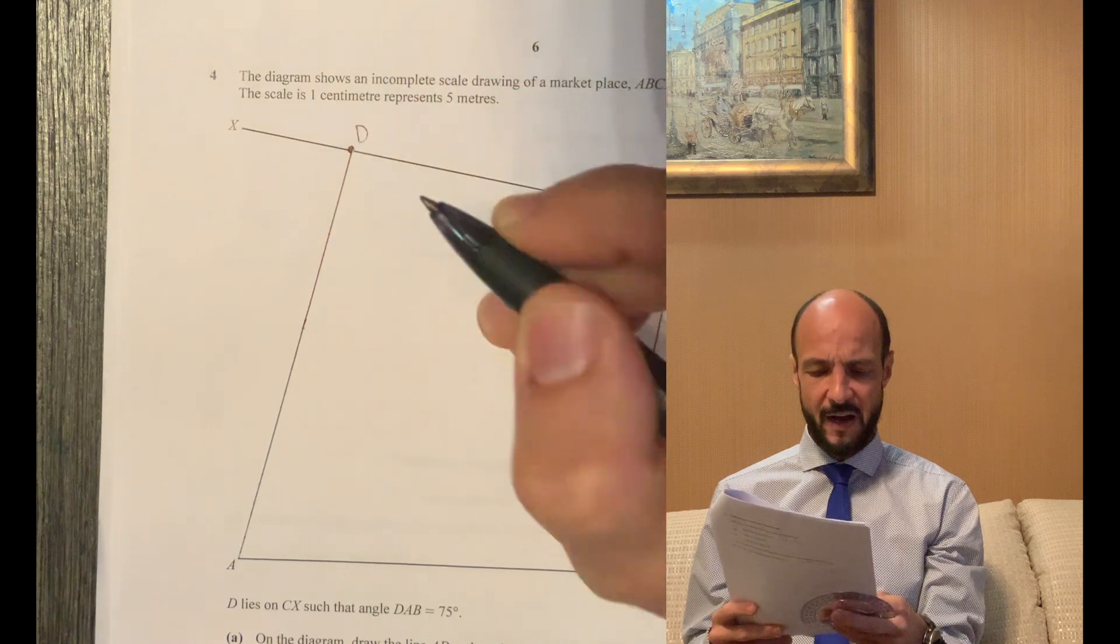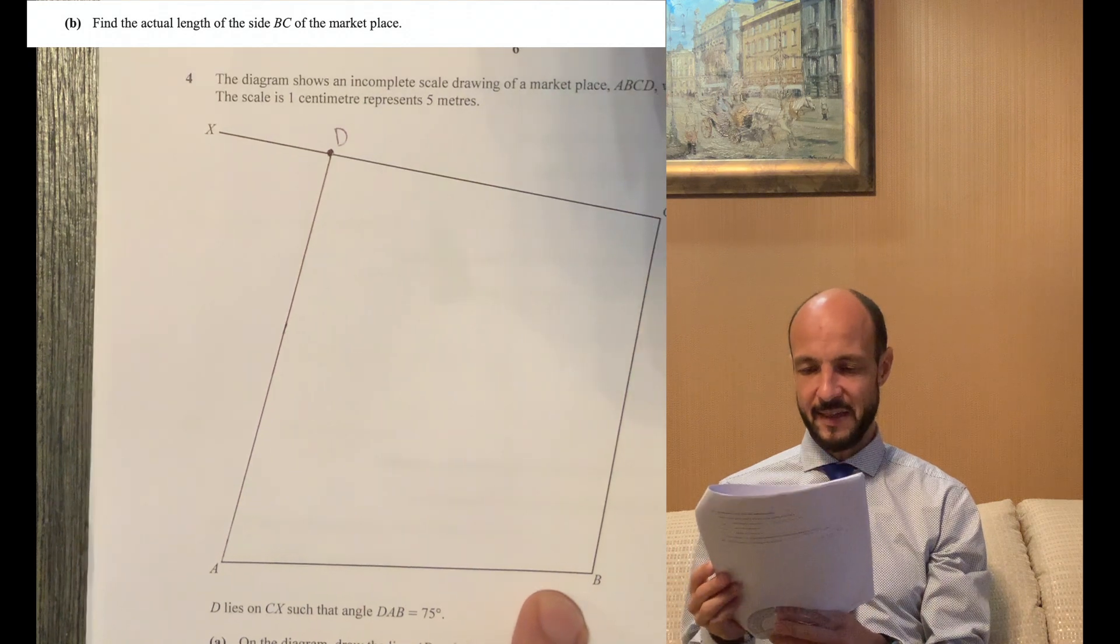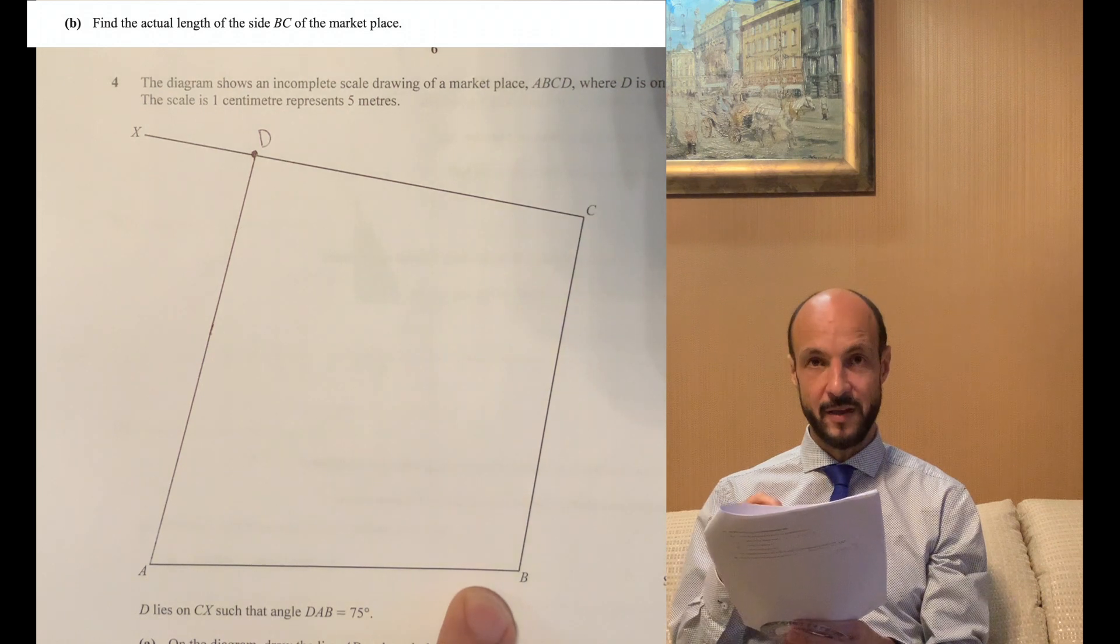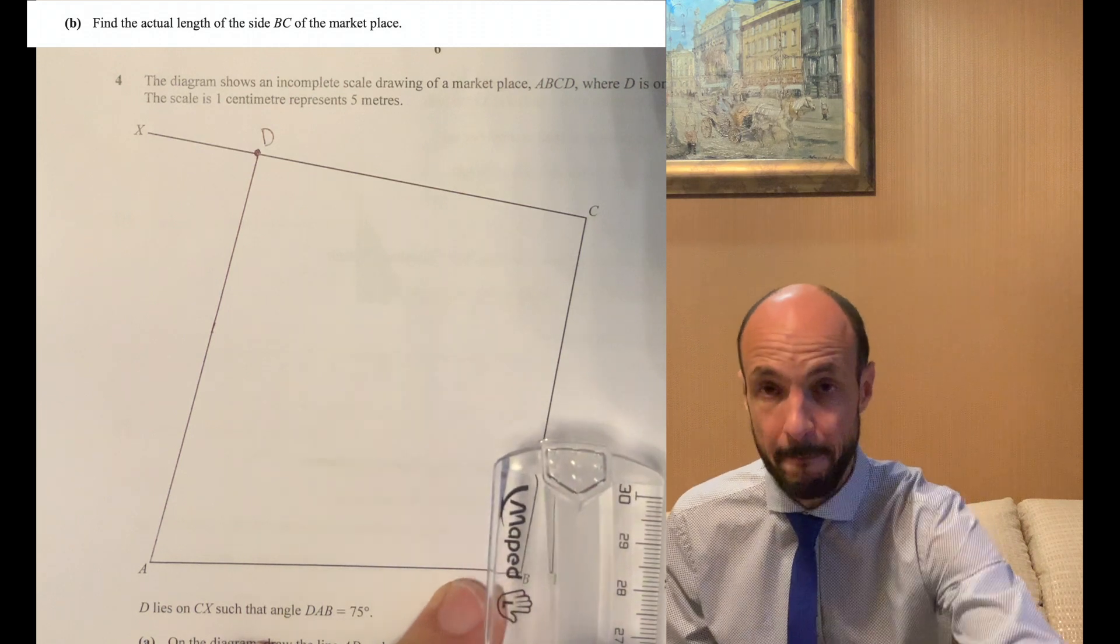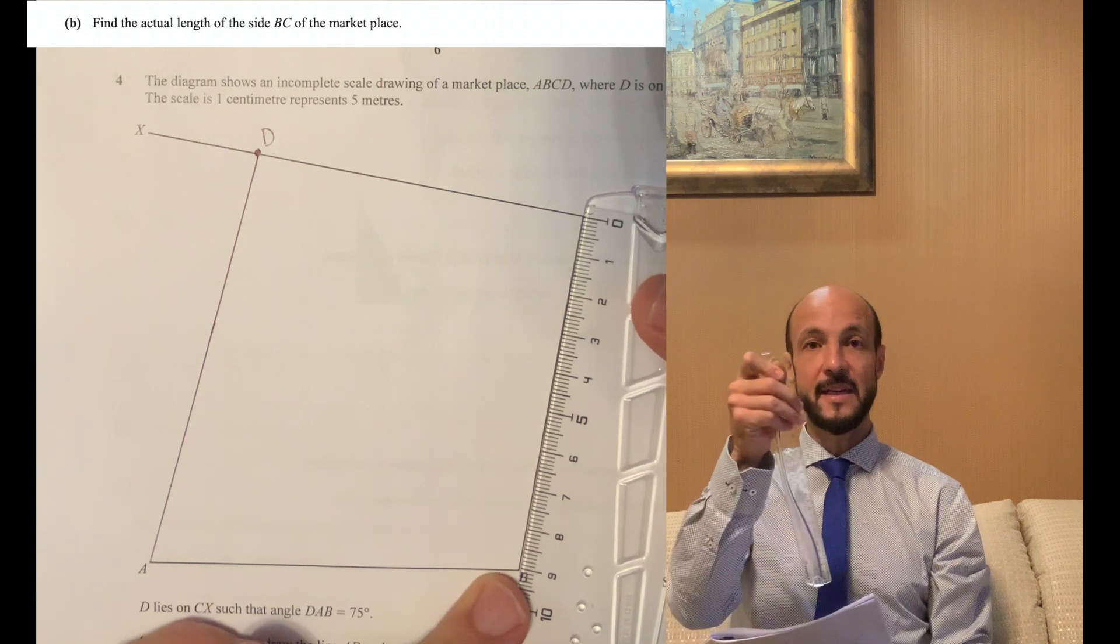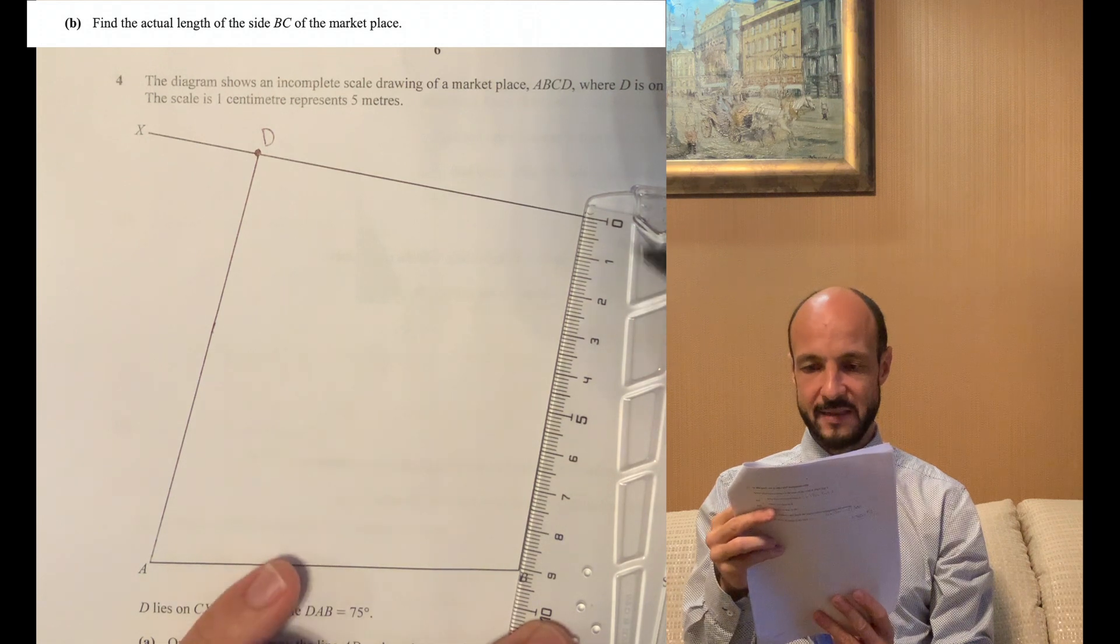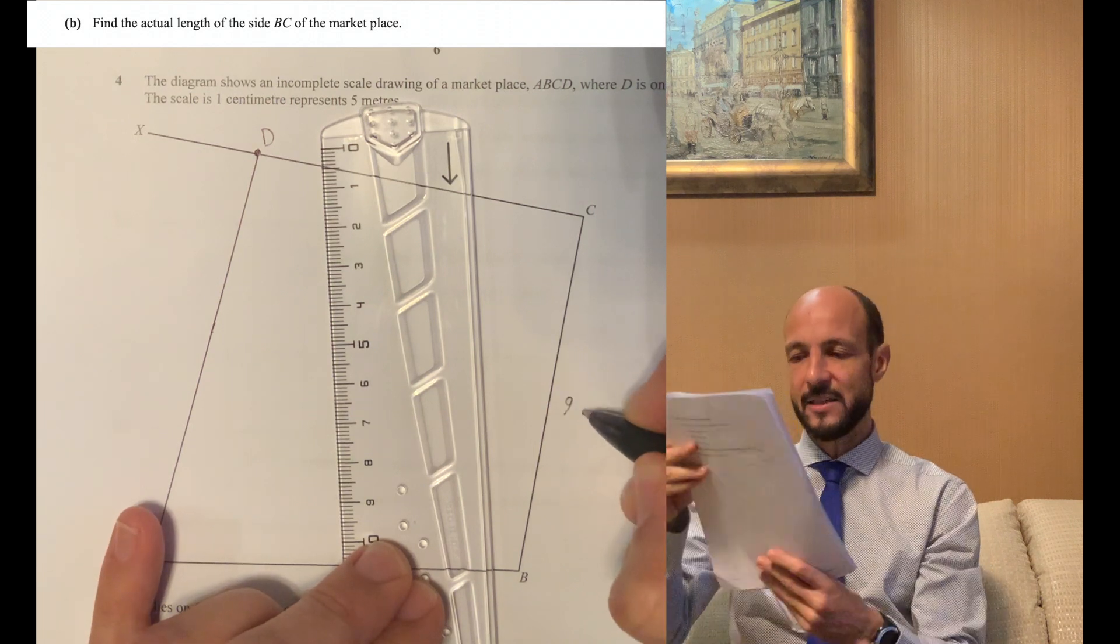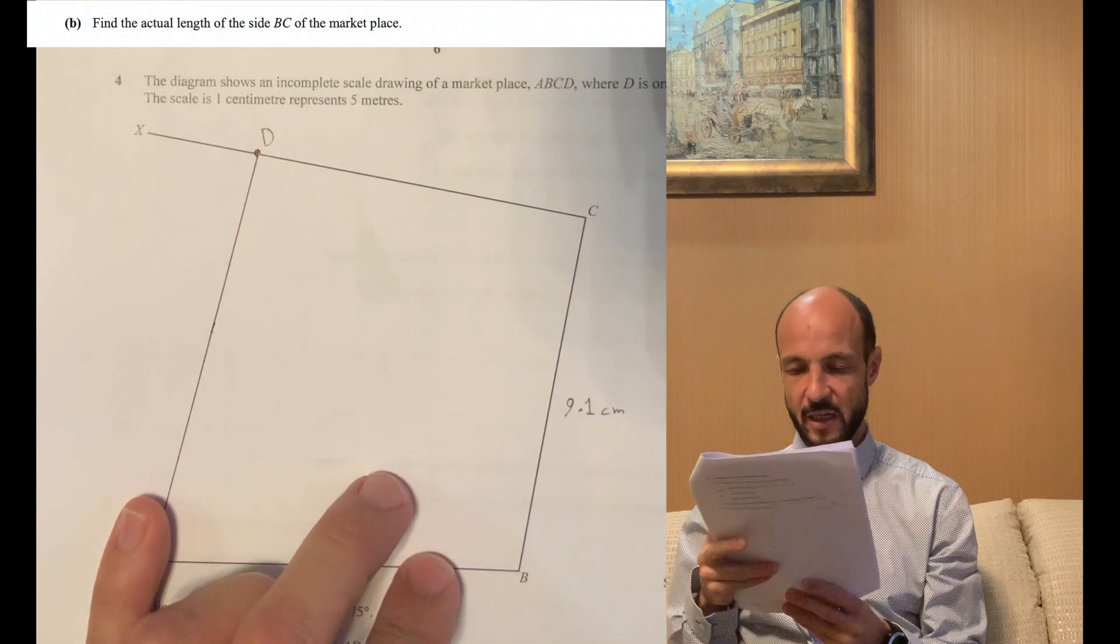Once we've done that it says find the actual length of the side BC of the marketplace. Now if you print out this exam script every printer is going to get a slightly different length, but all you need to do is take your ruler and carefully measure this line BC. So it means you have to match up your zero point on your ruler with either C or with B, make sure that's absolutely on the endpoint and then make sure that the ruler is lined up absolutely on the line. If you do that you should be able to count across the ruler and just read off.